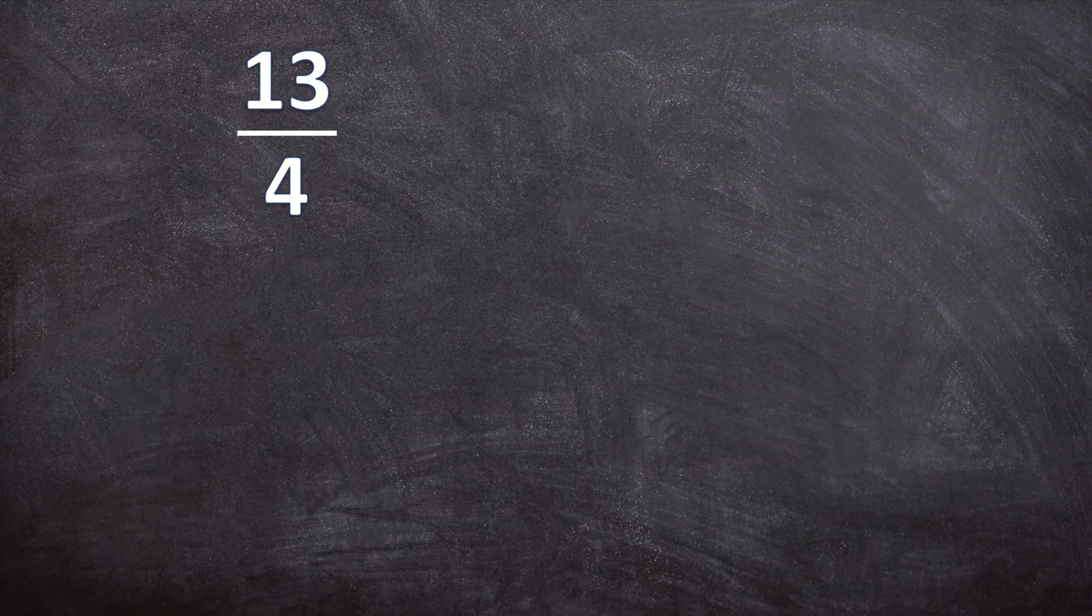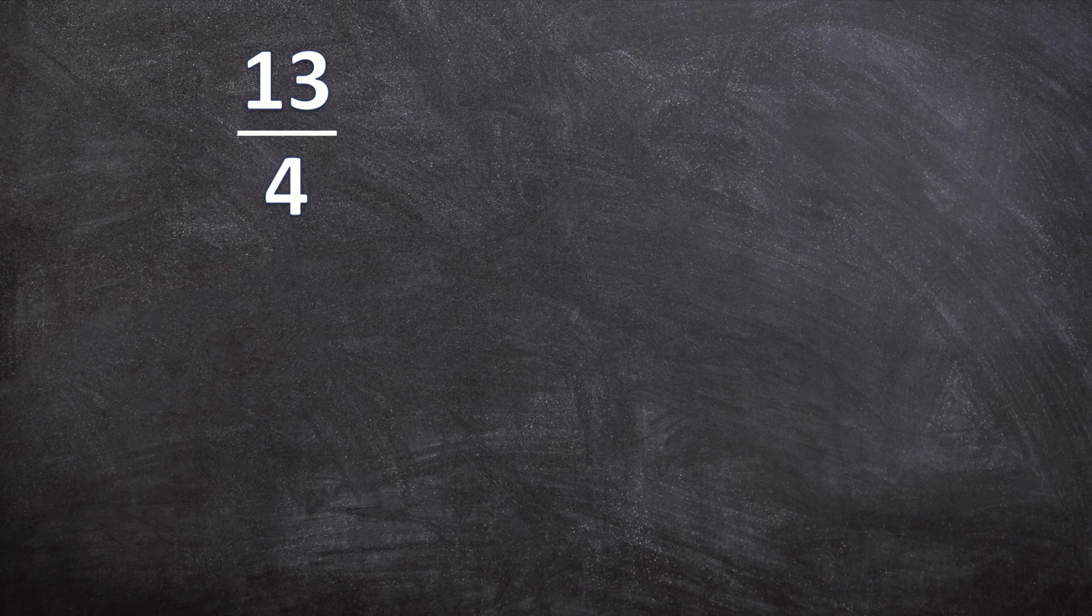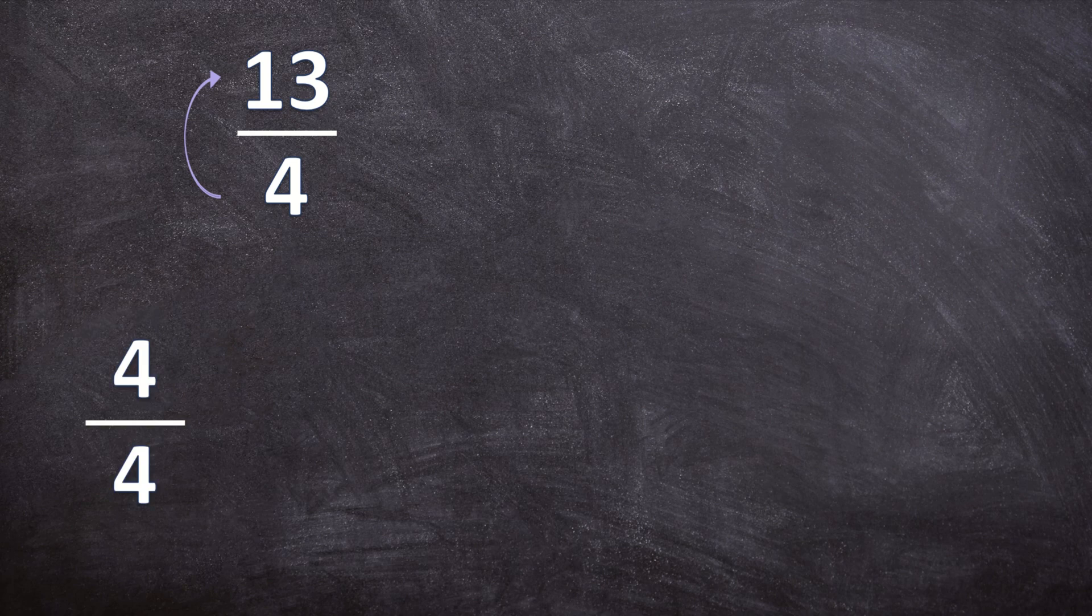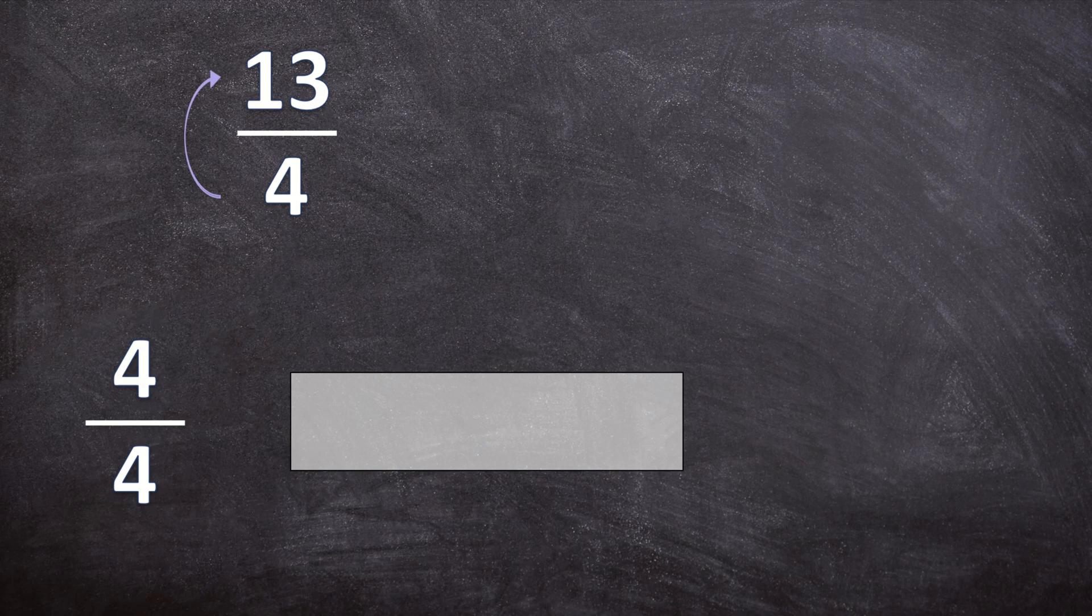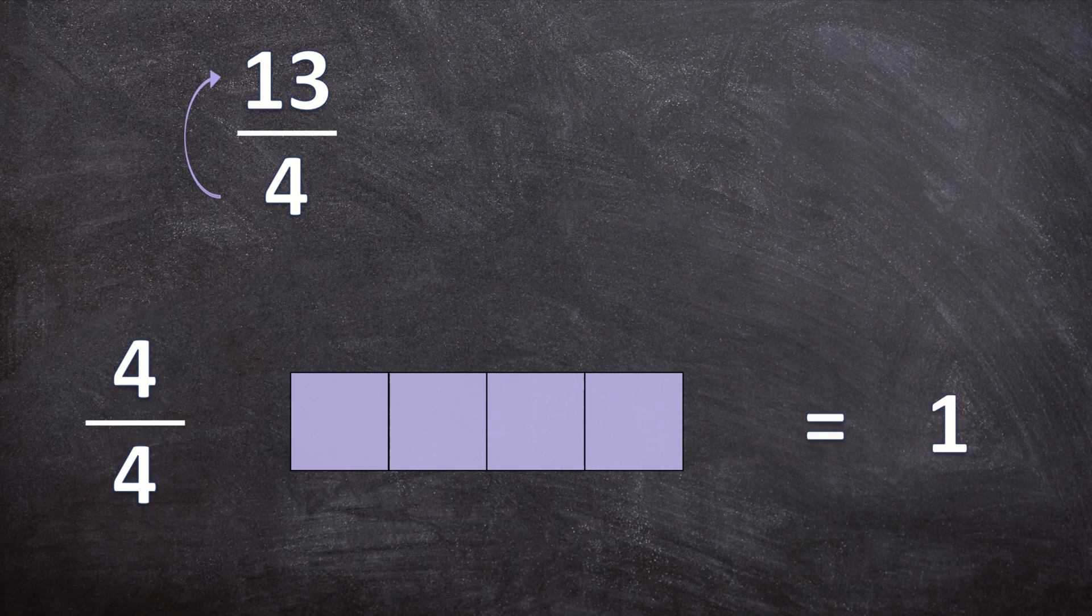So our first improper fraction is 13 over 4, and we need to convert it to a mixed number. The first step we're going to take is to see how many times we can take 4 out of 13. What does 4 out of 4 mean? When we have a shape, let's say a rectangle, and we divide it into 4 equal pieces and we color in 4 of those 4 pieces, that means we colored in one whole shape. So if you take 4 out, that means we took out one whole number.